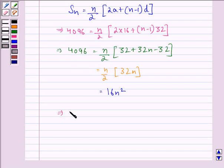So, this implies that N square is equal to 4096 divided by 16, that is equal to 256. Since N square is 256, this implies that N is equal to 16.